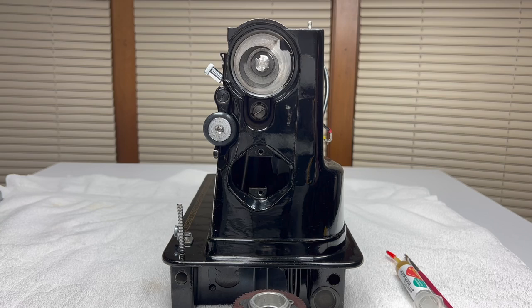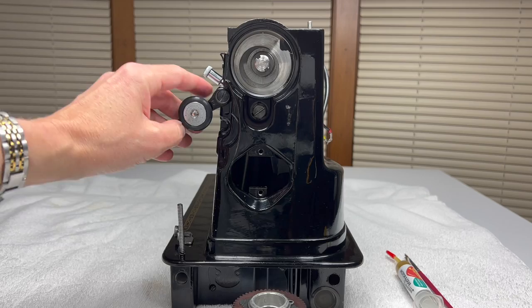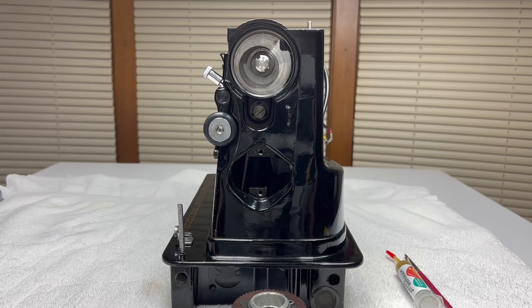We are just going to put the hand wheel back on the machine. We can do that because we have reinstalled the feed regulator and the bobbin winding parts which the hand wheel blocks access to those screws, so they have to go in first.